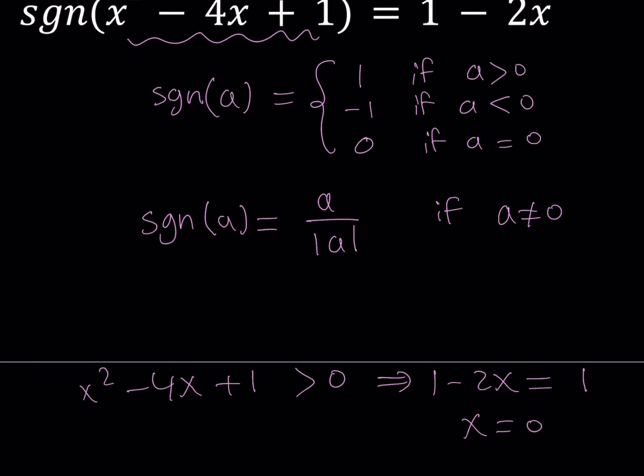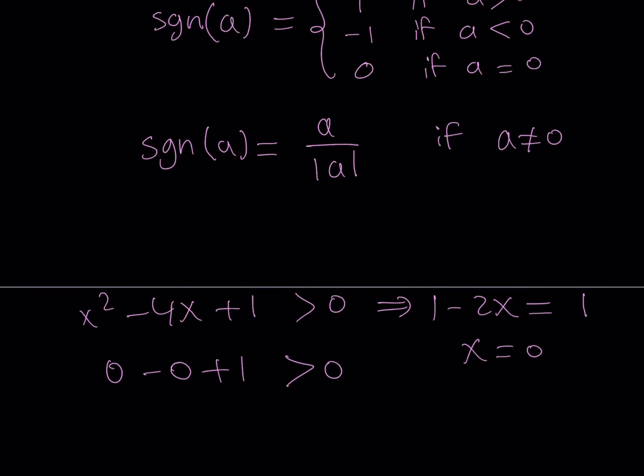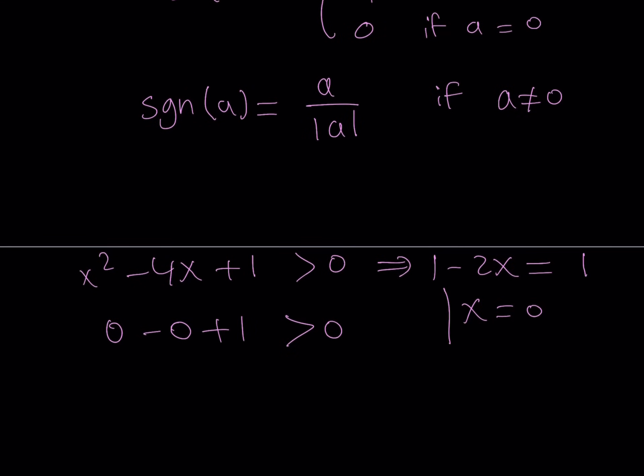But I'll also show you another approach using inequalities. So x equals 0. Does that satisfy our inequality? Because it has to, right? If you plug in 0 here, you get 0 minus 0 plus 1 is greater than 0, and that is true, right? Obviously, 1 is greater than 0, so x equals 0 is a valid solution. So we're going to pick that. Great. So that was my first case.